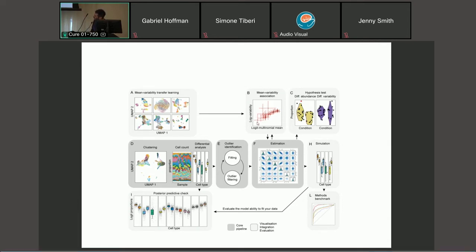As I mentioned, we model the relationship between abundance and variability. We use a Bayesian model, so this is all jointly modeled, and this relationship is hierarchically modeled. We can transfer information across cell types. We can inform this association, transferring knowledge from other reference datasets in case we have a low data dataset.